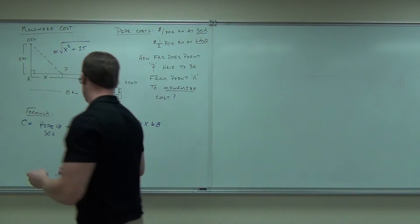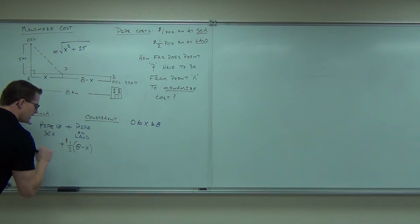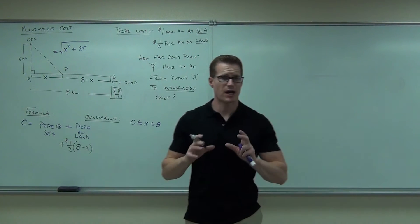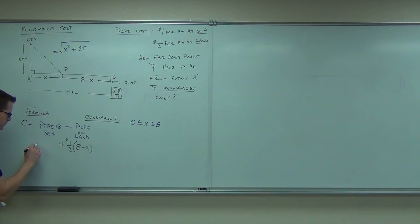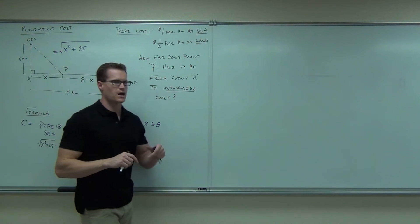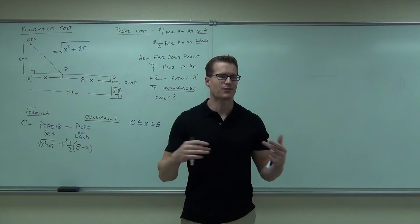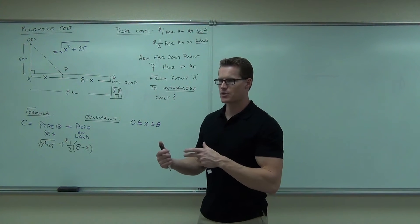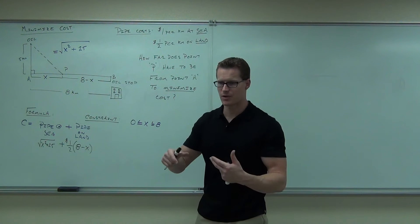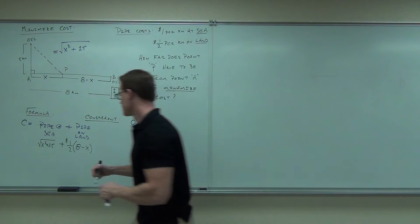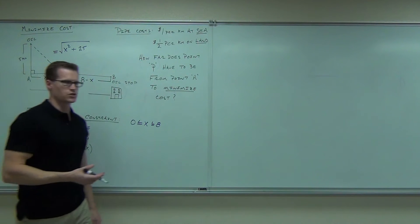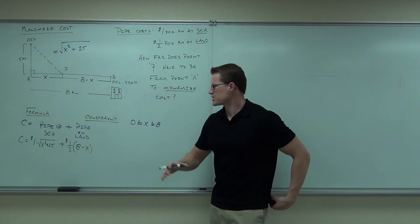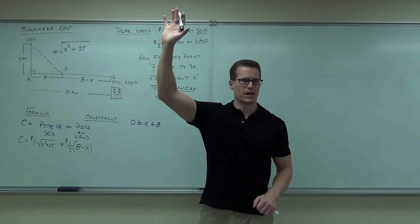You okay with this so far? That's going to be added to the pipe at sea. Now, we just figured out how much pipe we have at sea. It's the square root of X squared plus 25. That's how many kilometers of pipe we're going to have under the sea, or at the sea, in the sea. Each of those kilometers costs a dollar, so if I multiply a dollar times each of those kilometers, I'll have the total cost for the pipe at sea. And that's how you figure out the cost function in terms of X, the distance that you're looking for. Raise your hand if you're okay with that so far. I think that's where we actually left off last time.